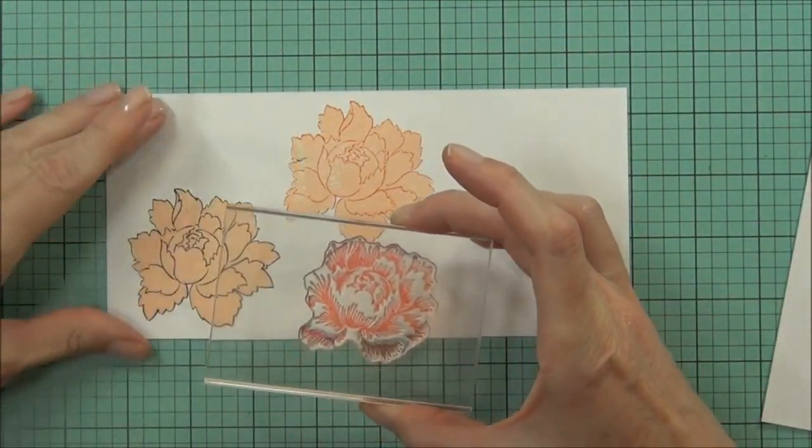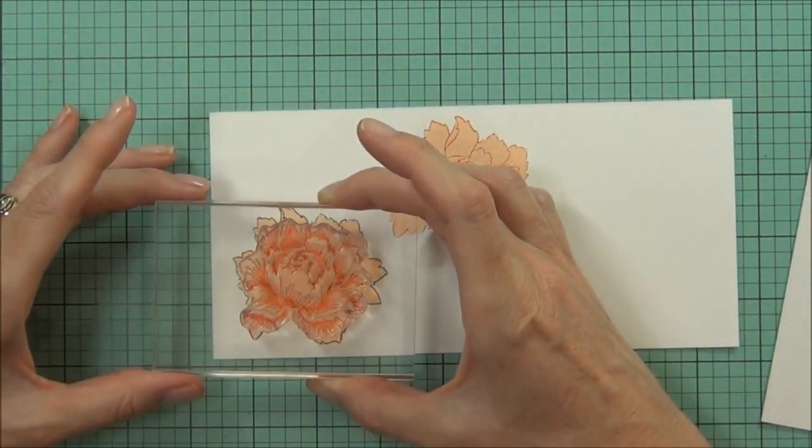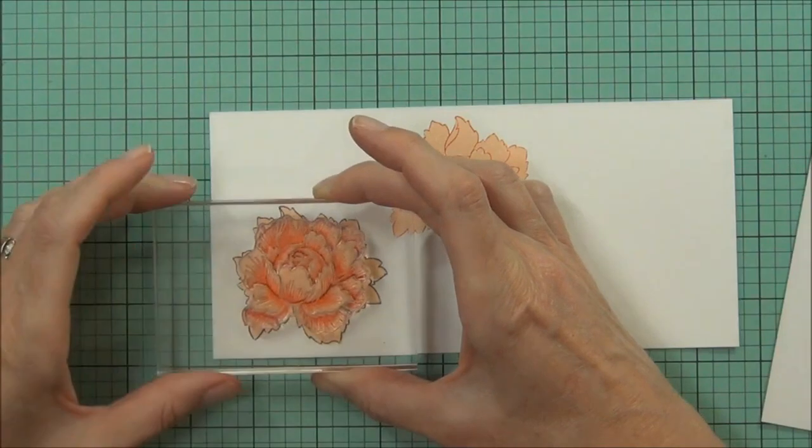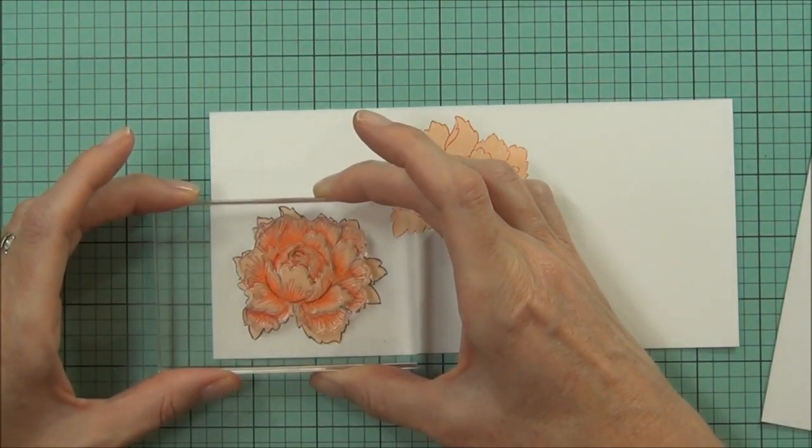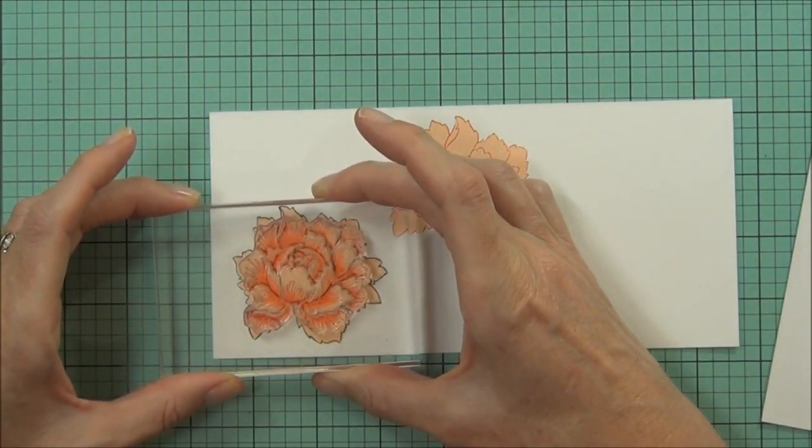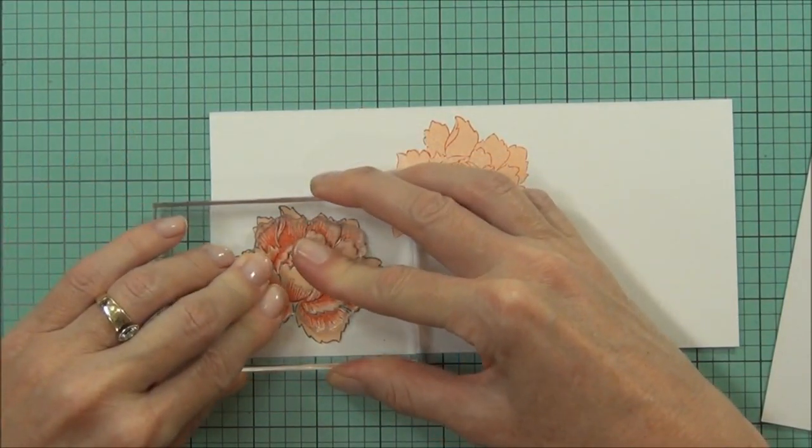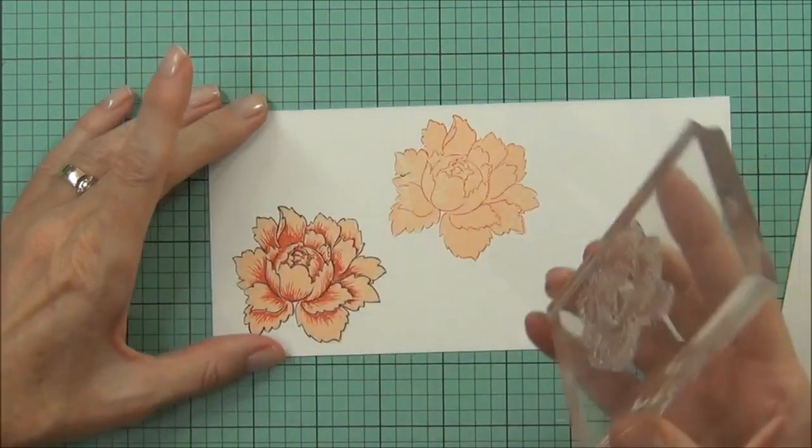If you look at the stamp, you can see the shape of the flower before you stamp. And then because I've actually stamped the outline and I've used black, it makes it easier. You can actually see where the edges of the petals are and line your stamp up much easier.